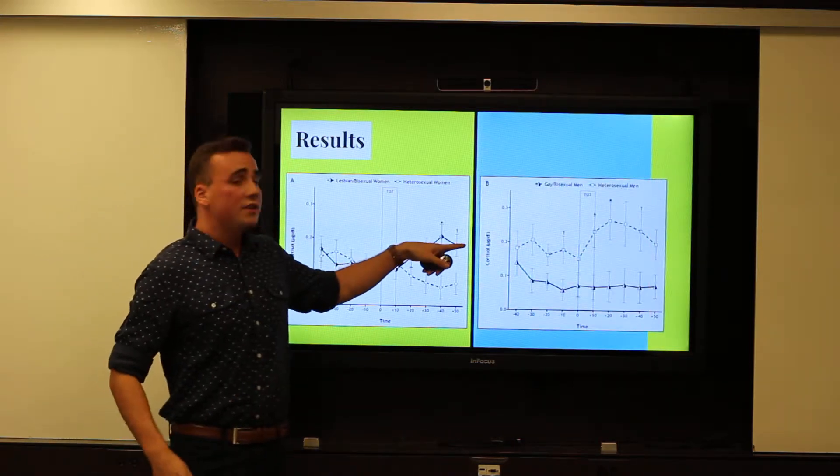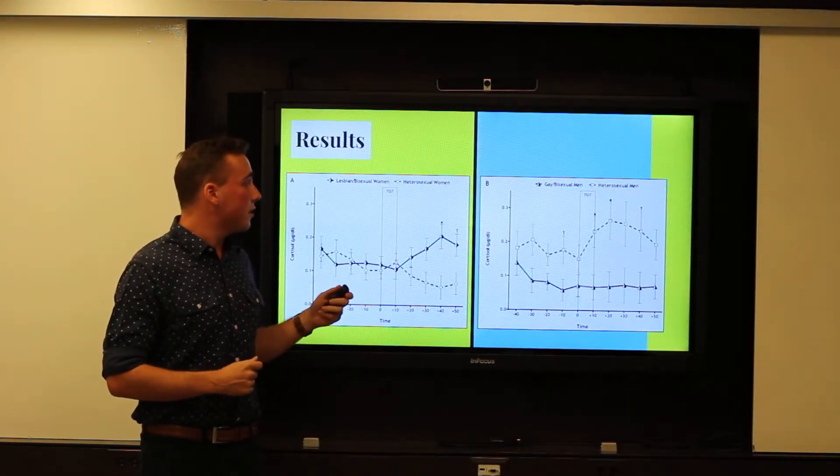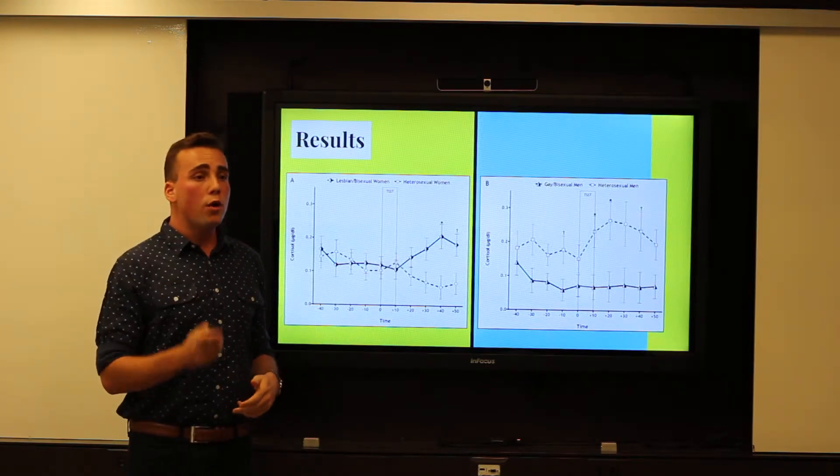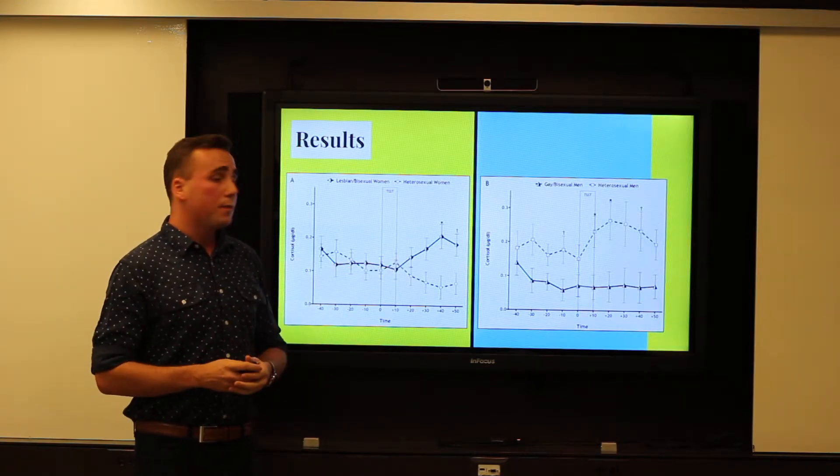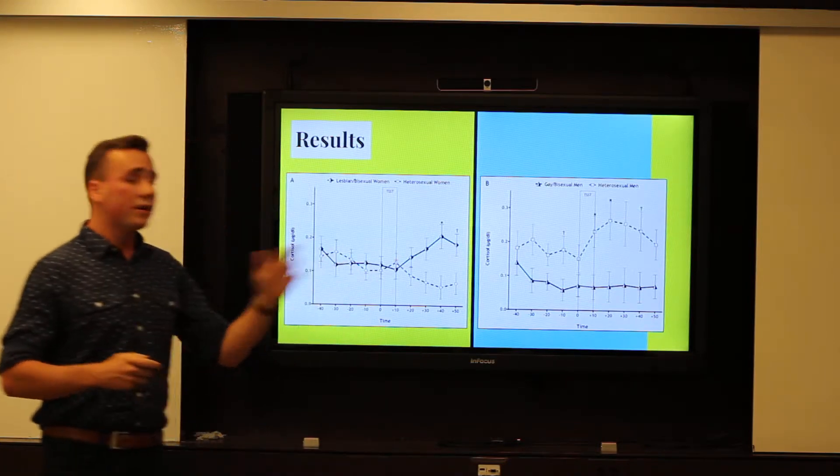Heterosexual men, as you can see here, showed fairly average and expected stress response results to this acute stressor. However, queer men almost flatlined. They showed almost no variation in their stress response, whether it be during the actual stress test, or immediately, or in the following 40 minutes.